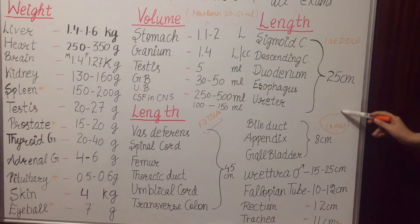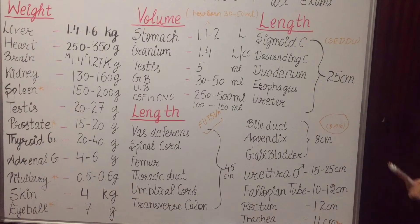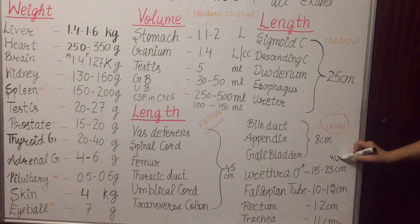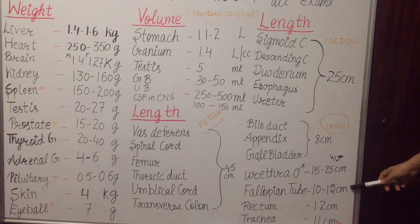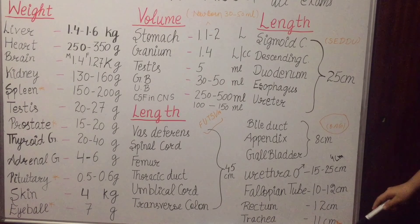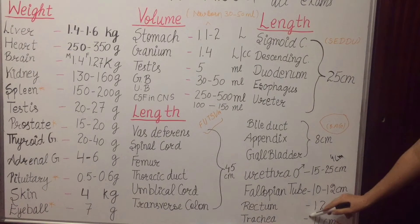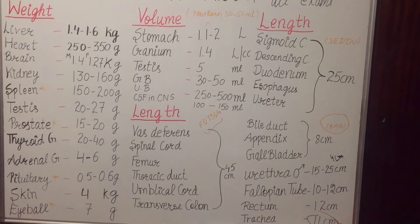Urethral length in males is 15 to 25 centimeter and in females is 4 centimeter. Fallopian tube length is 10 to 12 centimeter. Rectum length is 12 centimeter. Trachea length is 11 centimeter — trachea is very important for exams, don't forget: trachea is 11 centimeter.